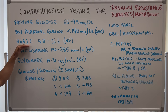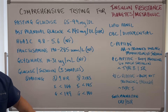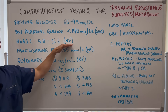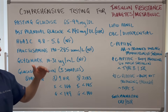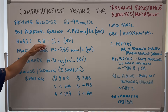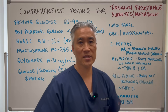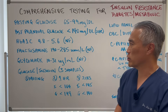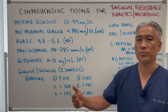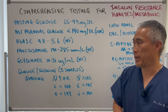Next is hemoglobin A1c. This is a three-month average and you can do this non-fasting — it doesn't matter if you've eaten. It should be between 4.8 and 5.6. Anything above 5.6 is considered insulin resistance. When you start to approach 6.2 to 6.5, then you're getting into that diabetic range.